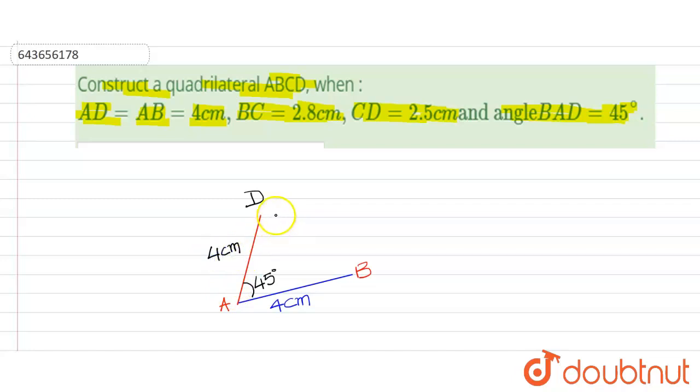Then from point D we will construct a line DC which is equal to 2.5 cm. So let us draw an arc. Suppose this is your arc.